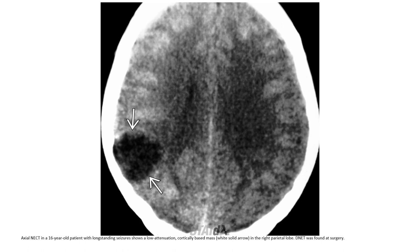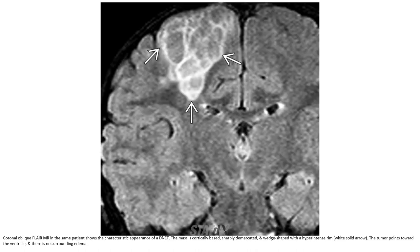Non-contrast CT of a 16-year-old patient with long-standing seizures. Low attenuation cortical-based mass in the right frontal lobe. DNET was found at surgery. The characteristic appearance of a DNET: the mass is cortically based, sharp edema-creating, wedge-shaped with hyperintensity. The tumor points toward the ventricle and there is no surrounding edema.